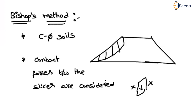Just remember two points: it is applicable for C-phi soils, and the contact forces between the slices are considered. These two points are more than enough if you are preparing for the GATE exam. This is what covers the friction circle method and Bishop's method.